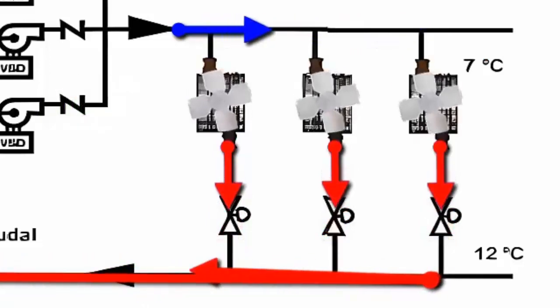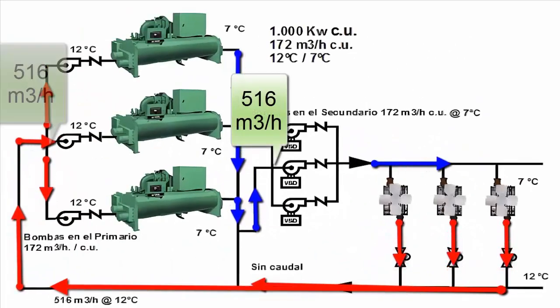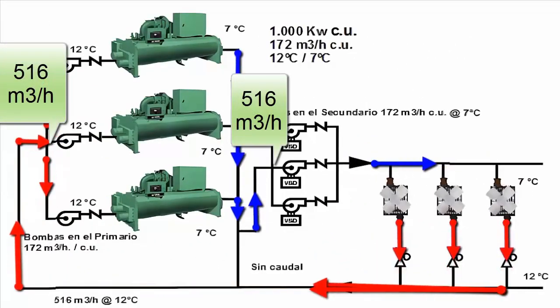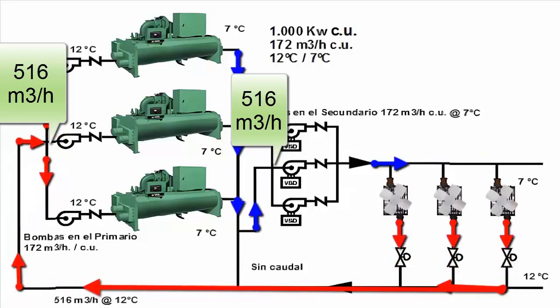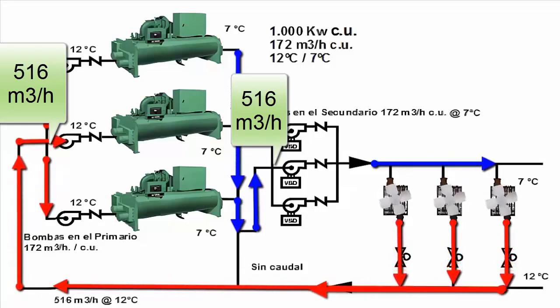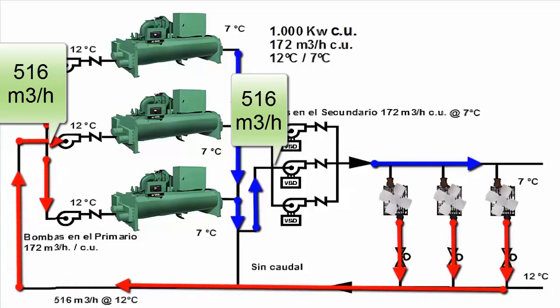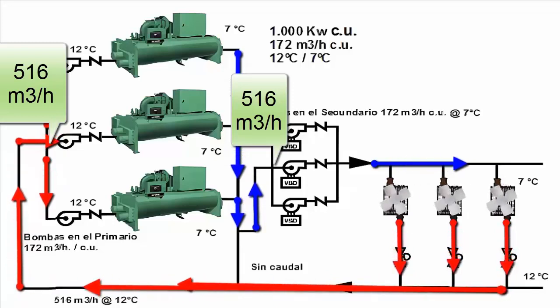In this example, at this moment, all units are operating at 100%. The three water chillers and the three pumps are running at maximum capacity, sending a total of 516 cubic meters of chilled water to the installation.